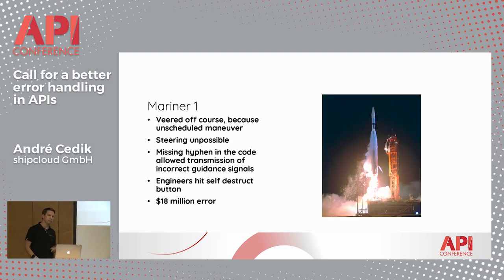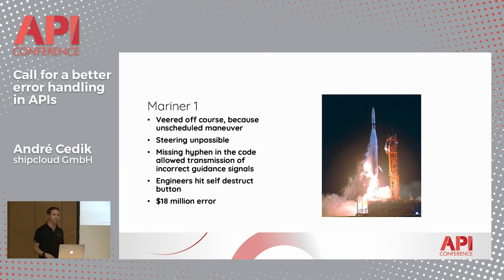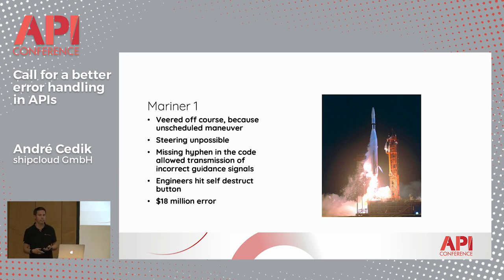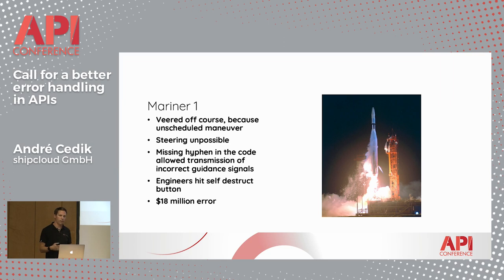In 1962, NASA launched Mariner 1 into space to collect a variety of scientific data about Venus during a flyby. Unfortunately, 293 seconds after launch, the spacecraft veered off course after an unscheduled maneuver. Engineers had to hit the self-destruct button and $18 million went up in flames.